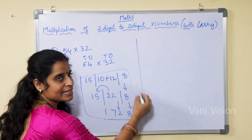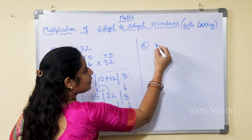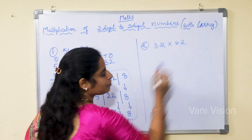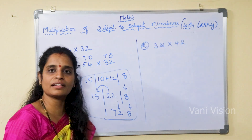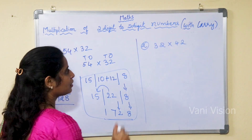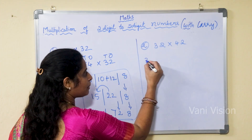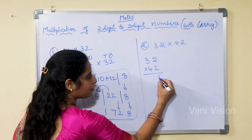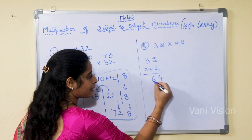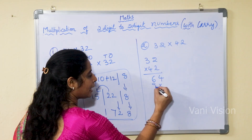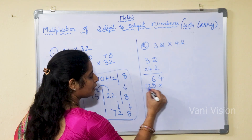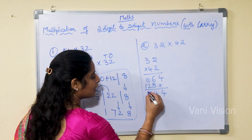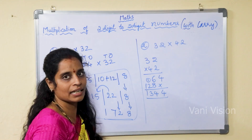Now we are going for our second example, that is 32 into 42. First we multiply: 32 into 42. 2 twos are 4, 3 twos are 6, 2 fours are 8, 3 fours are 12. This is what our answer, right?